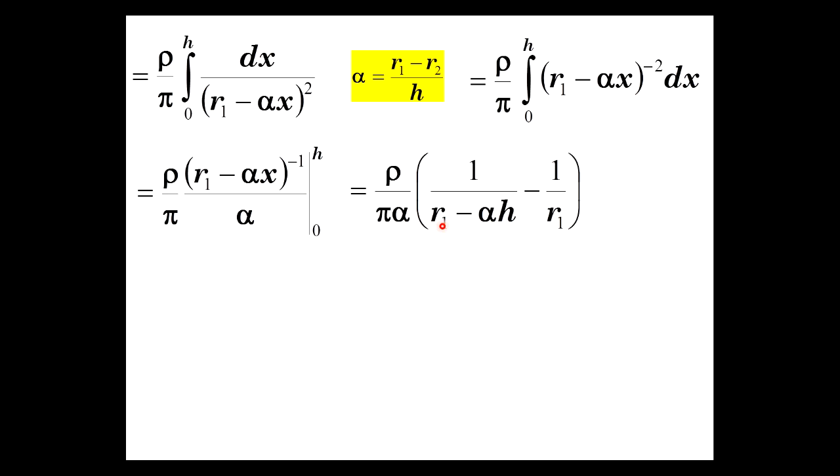So we have all this, but recognizing that alpha is still a little more complex, and it shows up twice. We're not done yet, are we? However, we can rearrange that as r1 minus alpha h.